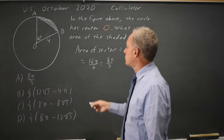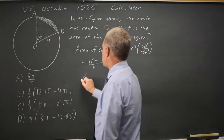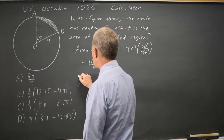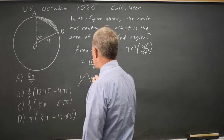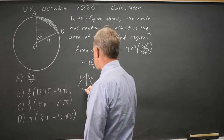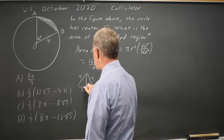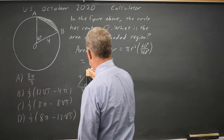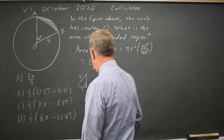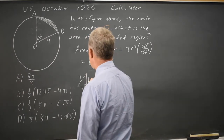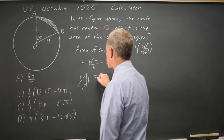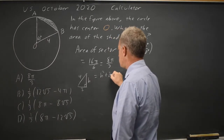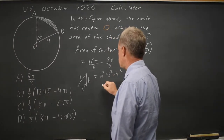Now I need the area of the triangle. I have an equilateral triangle with a base of 4 and two sides of 4. Looking at just the right triangle on the left, the height h is given by the Pythagorean theorem: h² plus 2² equals 4².